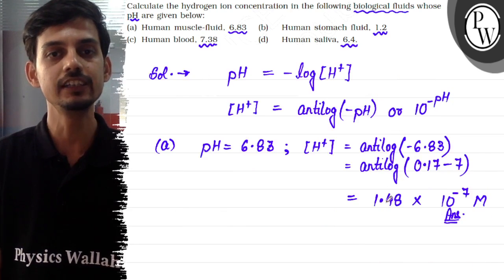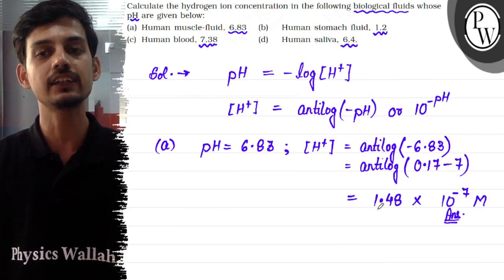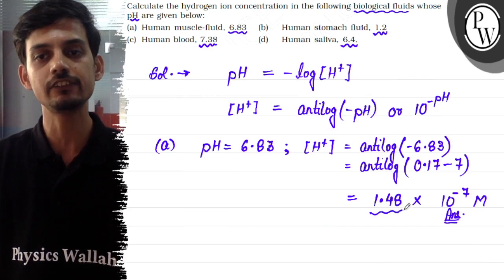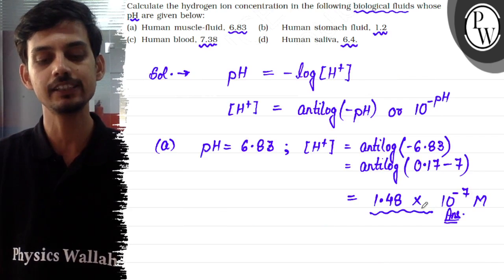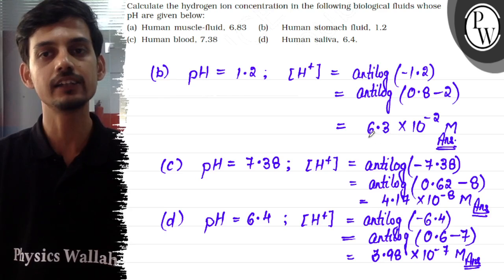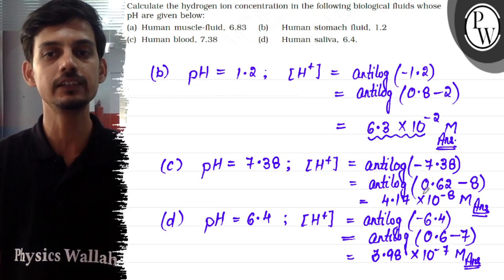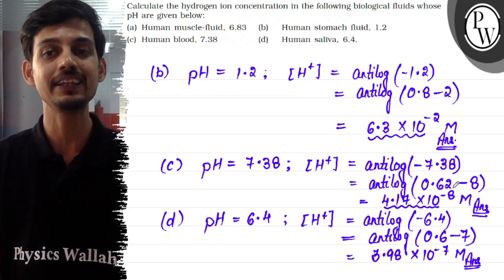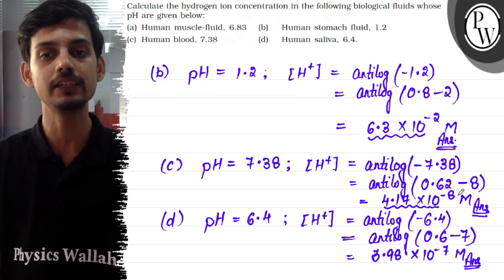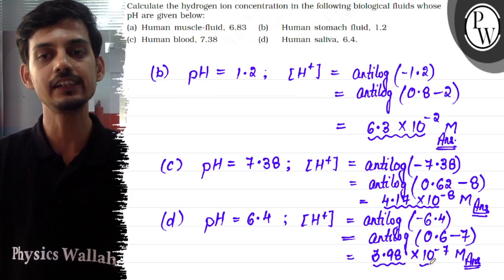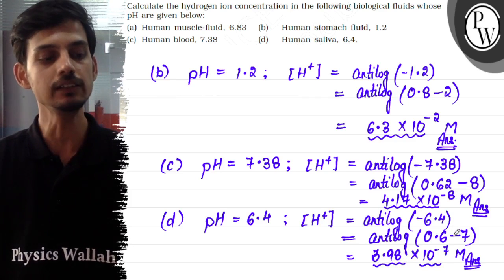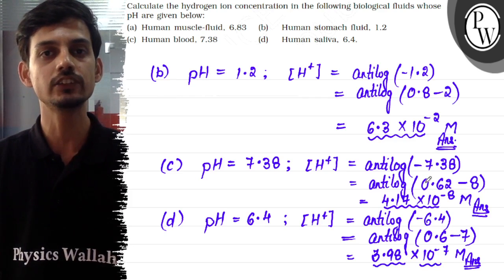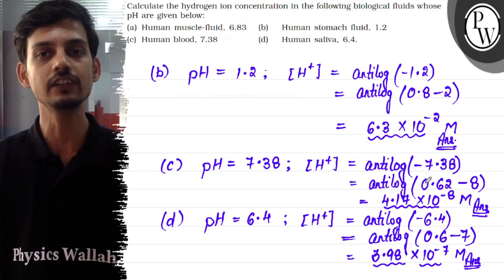So summarizing: the H⁺ ion concentration for part A (human muscle fluid) is 1.48 × 10⁻⁷ moles per liter; for part B (human stomach fluid) it is 6.3 × 10⁻² moles per liter; for part C (human blood) it is 4.17 × 10⁻⁸ moles per liter; and for part D (human saliva) it is 3.98 × 10⁻⁷ moles per liter. Hope this clears the question. Best of luck. Thank you.